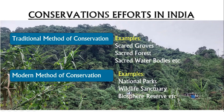Modern conservation methods include the well-defined geographical areas which are protected by the state government for the protection and conservation of biodiversity and its natural ecosystem. For example, national parks, wildlife sanctuaries, community reserves, conservation reserves, biosphere reserves, etc.